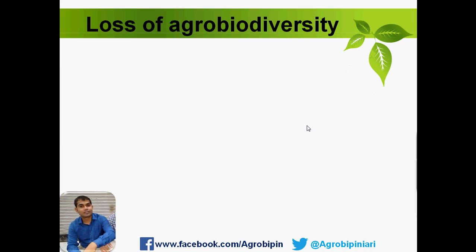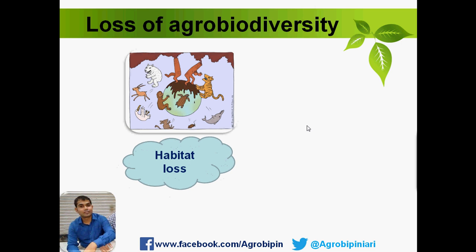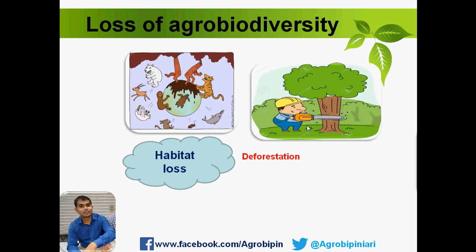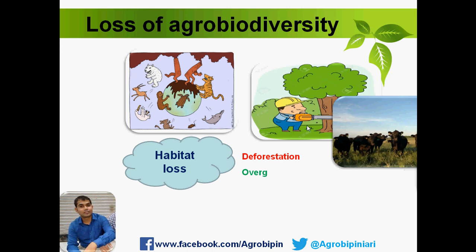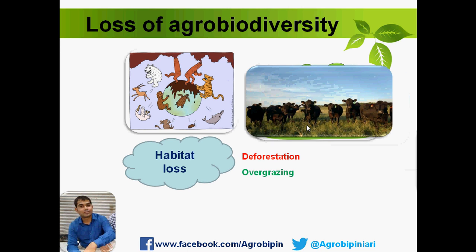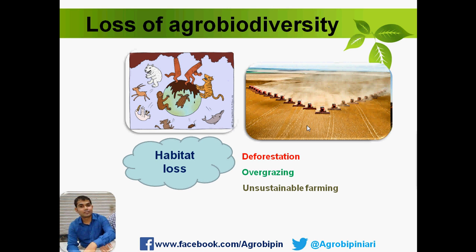Humans are greedy by nature and are causing losses of agrobiodiversity. There are also many other factors causing habitat loss. The first is deforestation, mostly done by man to make land available for agriculture, industry, or other purposes. Another is overgrazing — in most developed and some developing countries, grazing land is used so intensively that it creates very high pressure on vegetation. Unsustainable farming is also a major cause: crops like wheat, rice, maize, and sorghum occupy nearly 70–80% of arable land worldwide, and this type of monoculture is disturbing agrobiodiversity day by day.